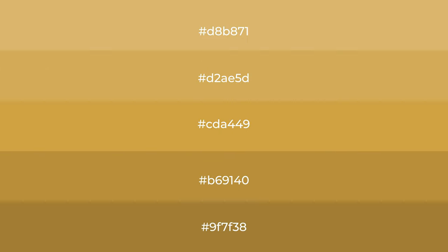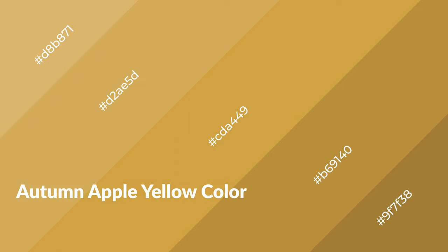To generate shades of a color, we add black to the color, and it is used in patterns, 3D effects, and layers. Shades create depth and drama. Autumn apple yellow is a warm color and it emits cozier and active emotions.